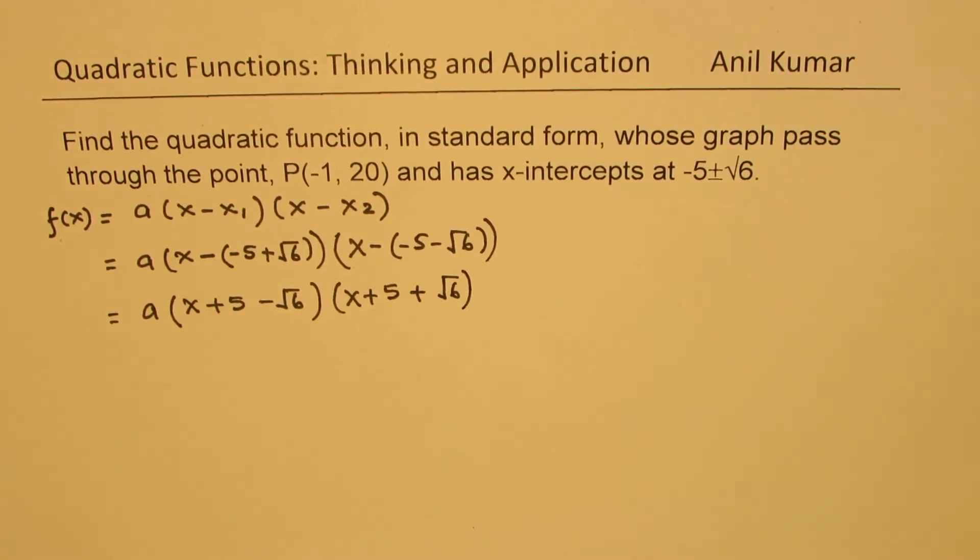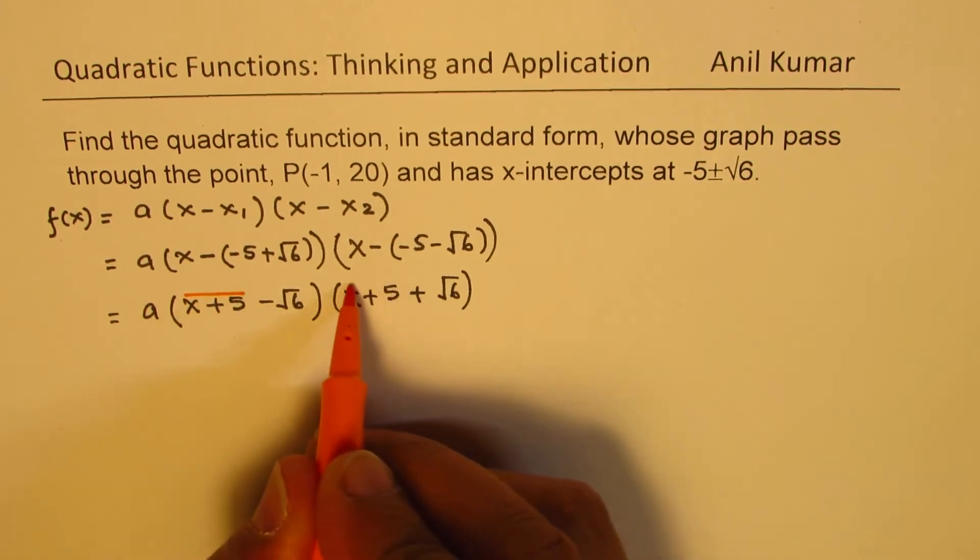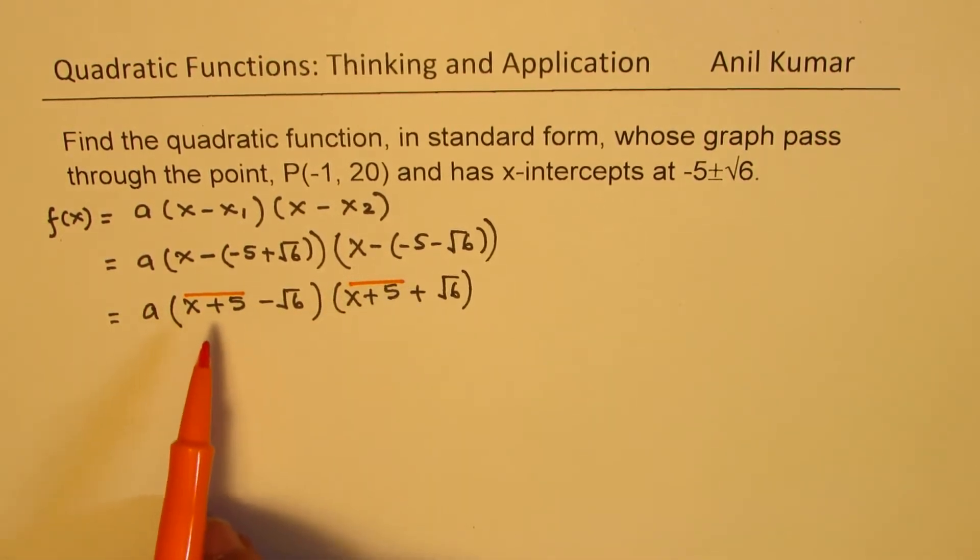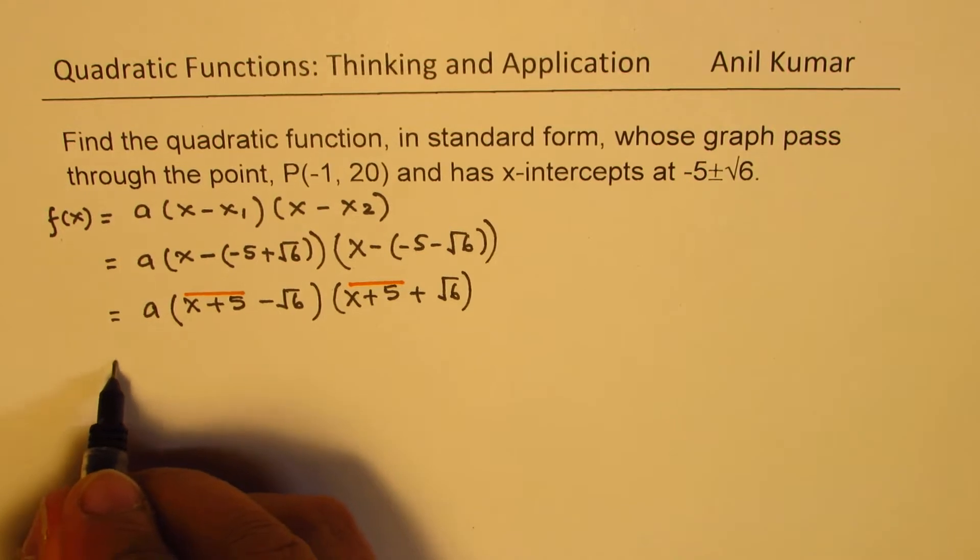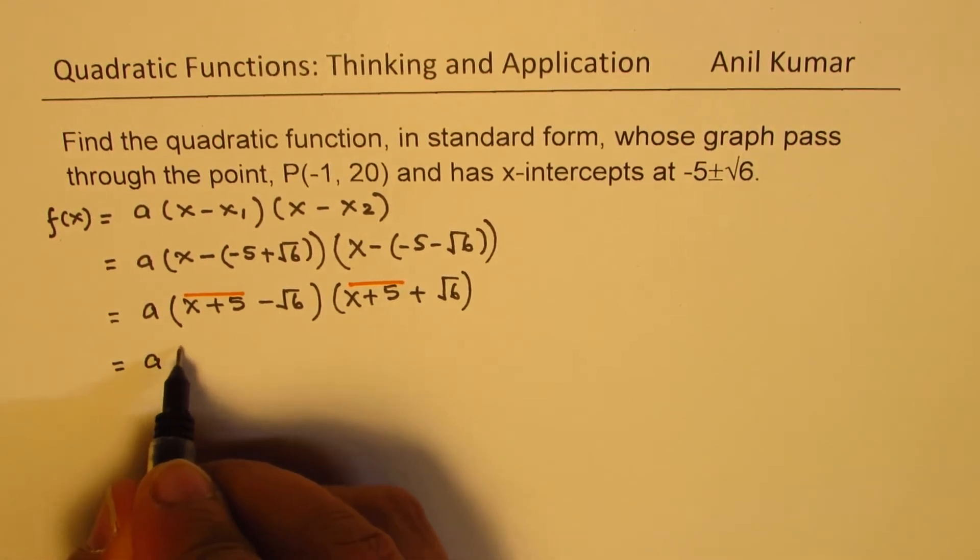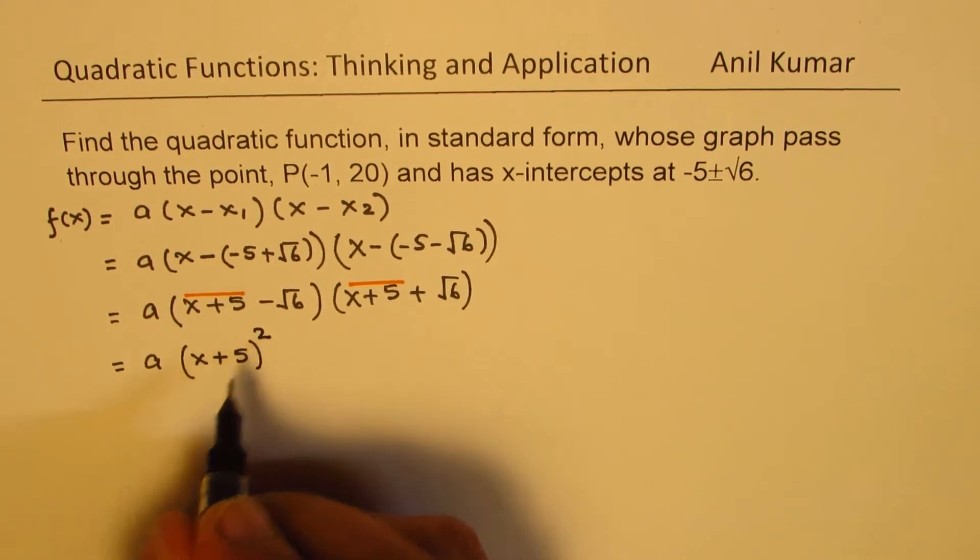Now, if you look into it, you can think about difference of squares when you multiply (a - b) times (a + b). So you could write this as equal to a times (x + 5) whole square, minus (√6) whole square.